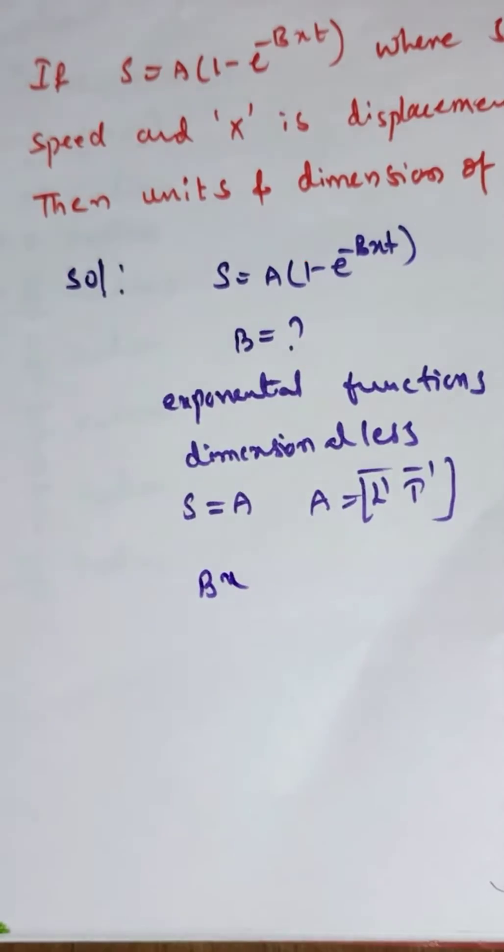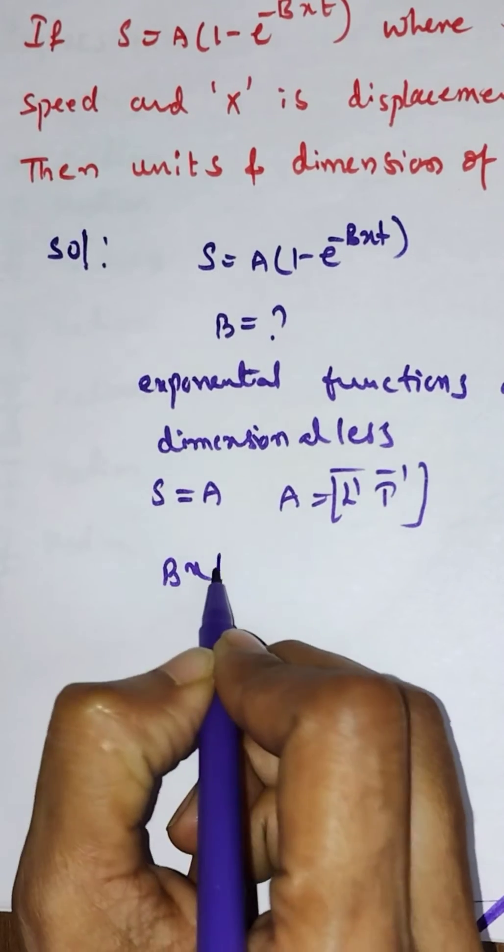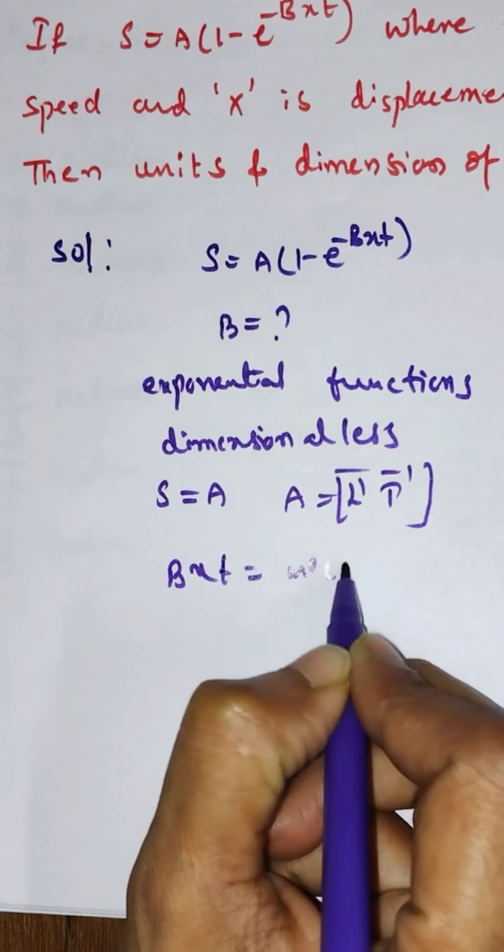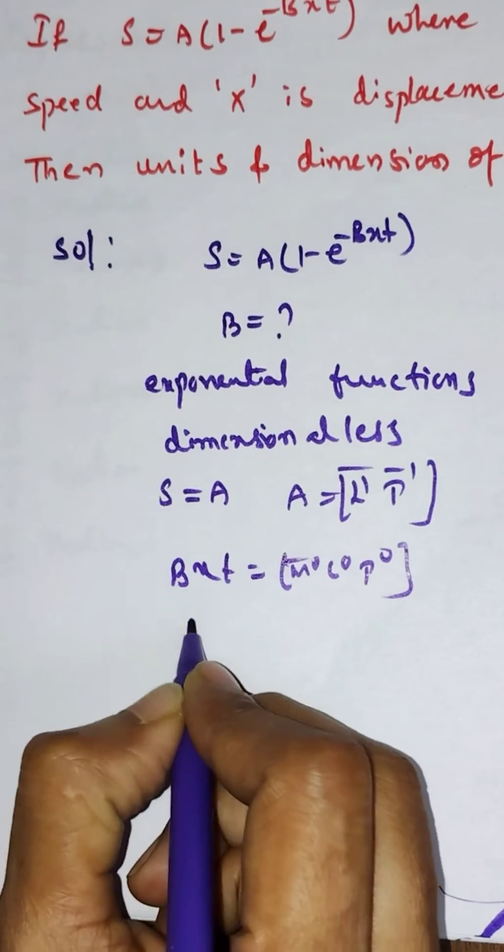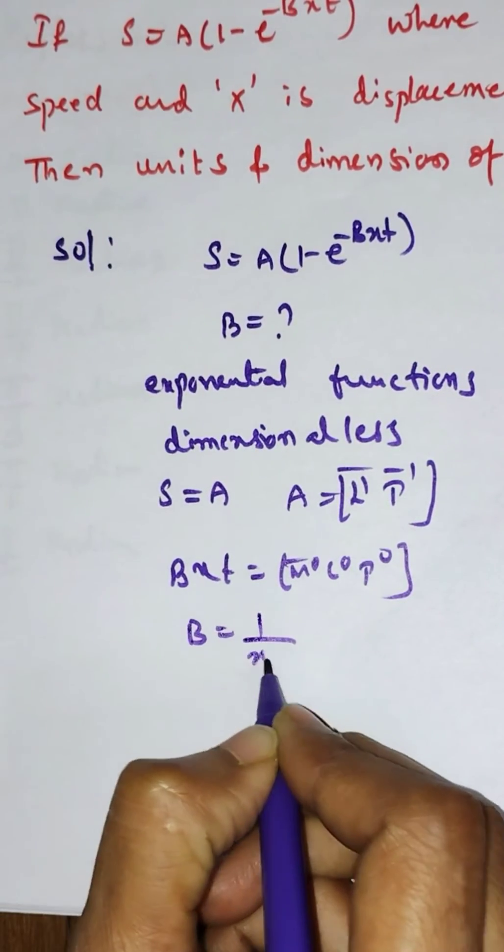Coming to B: Bxt is equal to dimensionless, which is [M^0 L^0 T^0]. They are asking for B, so B equals 1 divided by xt.